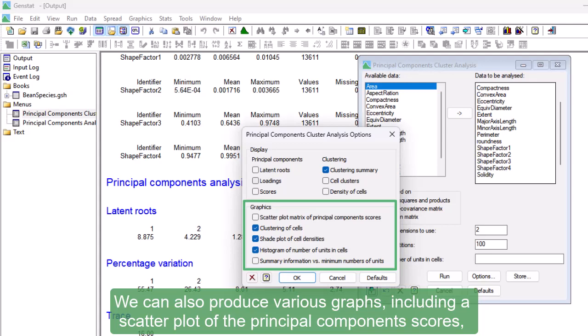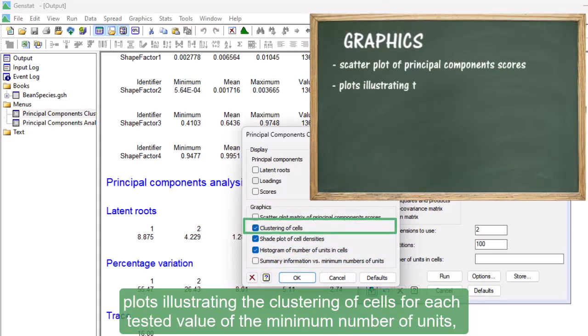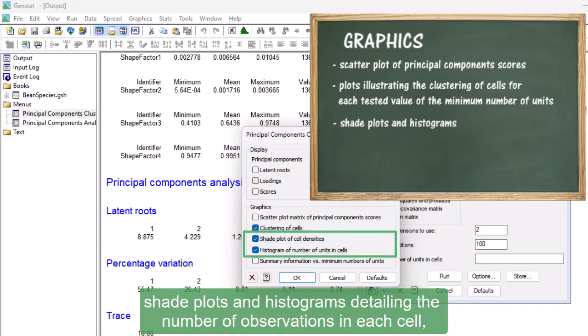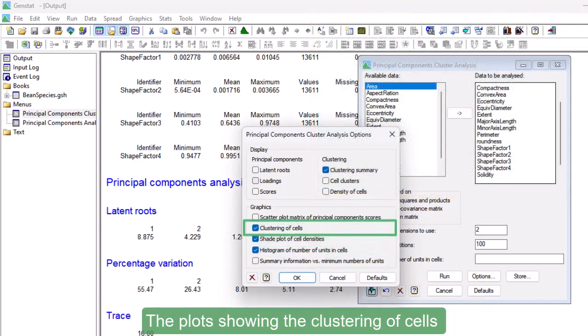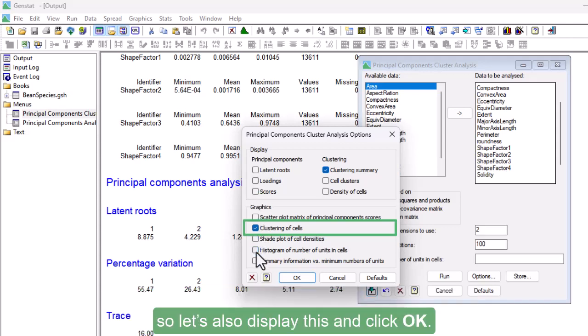We can also produce various graphs, including a scatter plot of the Principal Components' scores, plots illustrating the clustering of cells for each tested value of the minimum number of units, shade plots and histograms detailing the number of observations in each cell, and a line plot of the summary information from each tested value of the minimum number of units. The plots showing the clustering of cells are useful for assessing which minimum number of units gives a suitable clustering solution, so let's also display this and click OK.